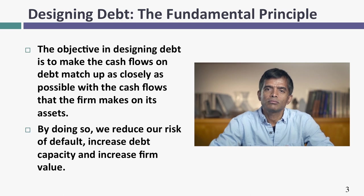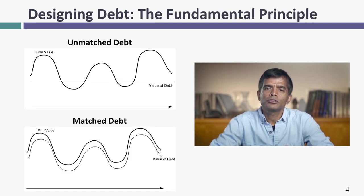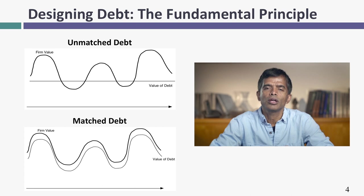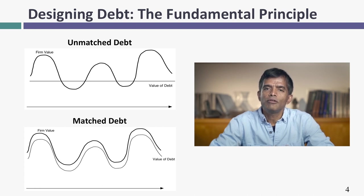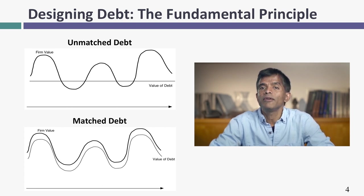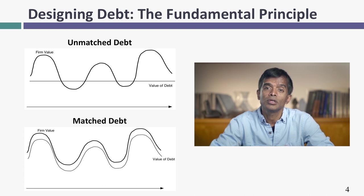And here's why it matters. If you look at the chart at the bottom of this page, notice that it's the value of a firm that goes up and down over time — you can think of it as a cyclical or commodity company. I've given you two contrasting debt issues. In the first one, the value of the debt stays fixed no matter what. When the value of the debt stays fixed, this company is in trouble every time the value of the business drops below the value of the debt. There are at least two places on the graph where it happens, and in those scenarios this company is technically bankrupt.